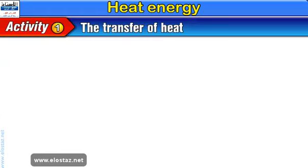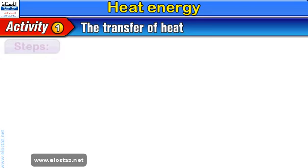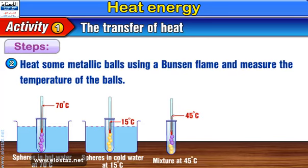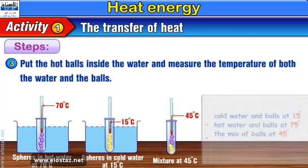Activity 1: The transfer of heat. Steps. Number 1: Bring a jar containing some water and measure the temperature of water using a thermometer. Number 2: Heat some metallic balls using a Bunsen flame and measure the temperature of the balls.